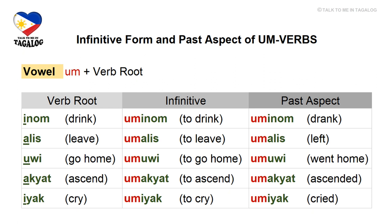Next we have alis, meaning leave. Alis starts with an A, so the infinitive form is umalis, meaning to leave. The past aspect is also umalis, meaning left. Then uwi, meaning go home — it starts with a U, so the infinitive form is umuwi, meaning to go home.